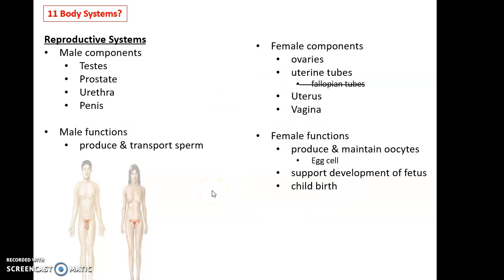And the functions of the female reproductive system include production and maintenance of the oocytes. Oocytes, also known as egg cells, coming from the ovaries. Supporting the development of the fetus within the uterus. And, of course, childbirth to expel the infant when the developing process is complete.